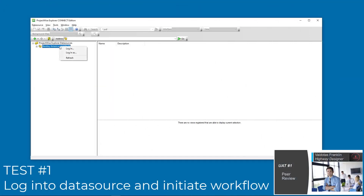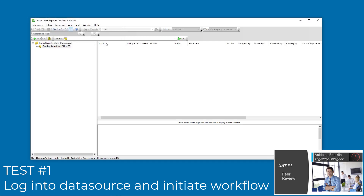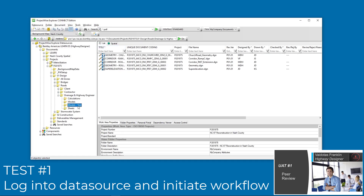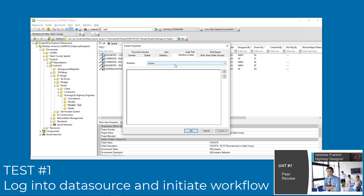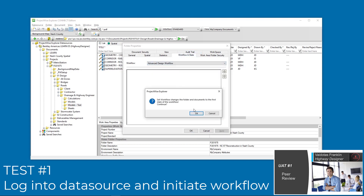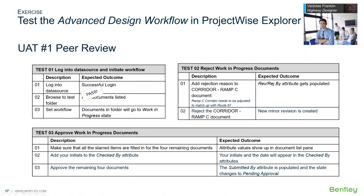For Test 1, Viadotis logs into the data source and browses to the test folder. He then sets the workflow to Advanced Design Workflow. The documents are put into the work-in-progress state. He then reviews each document in the appropriate application, such as OpenRoads Designer. Test 1 passes.